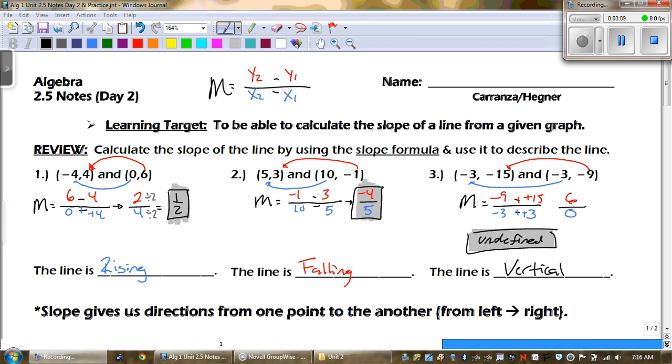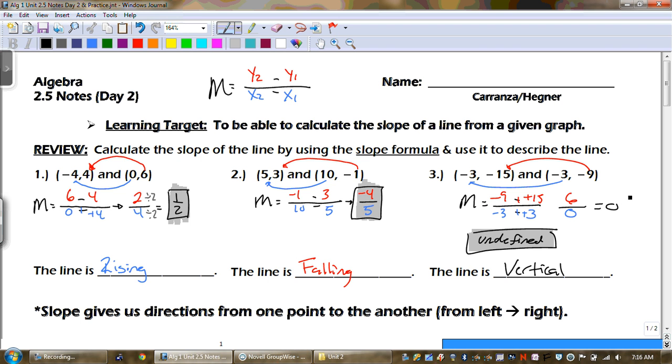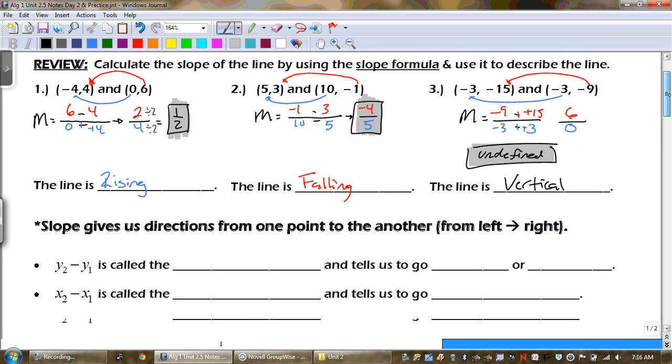Now remember, my slope is not 6 over 0. You can't divide by zero because you always want to simplify your answer. It can't be zero or undefined at the same time. When I divide, I get an error. You get an error because it's undefined. And all undefined lines are vertical. Alright, let's move on.